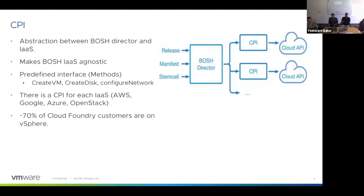There's a CPI for each IaaS out there — AWS, Google, Azure, OpenStack, and of course vSphere. Most of these CPIs are owned by the individual companies, except AWS, which is still managed by Pivotal. Worth noting, 70–75% of Cloud Foundry customers are currently on vSphere, so the vSphere CPI is one of the most widely used CPIs in the BOSH community.